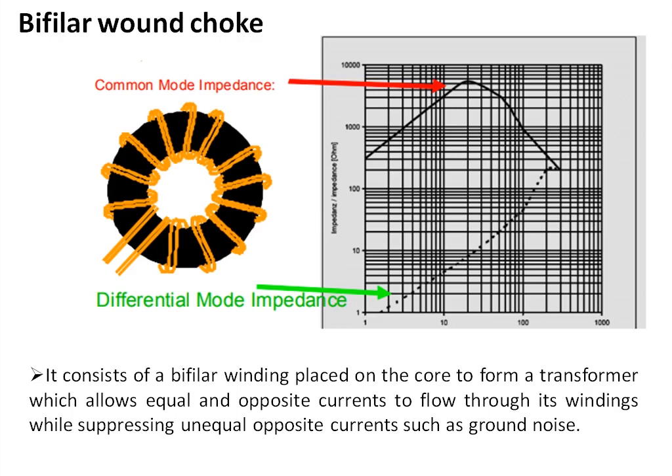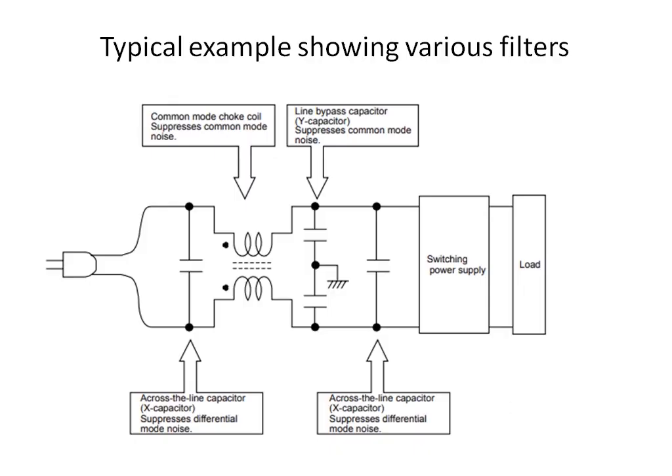This is a typical example showing the location of various filters in the path of incoming power supply going to a switched mode power supply. The X capacitor placed across the line suppresses differential mode noise. Common mode noise is suppressed using the common mode choke. Y capacitors also suppress common mode noise. An additional X capacitor at the output suppresses any remaining differential noise. The position of these capacitors can also be placed between the switch mode power supply and the load if the load carries critical signals, using different types of capacitors to minimize noise.